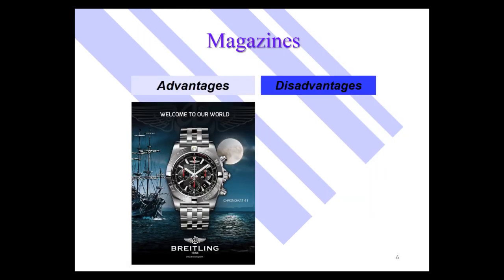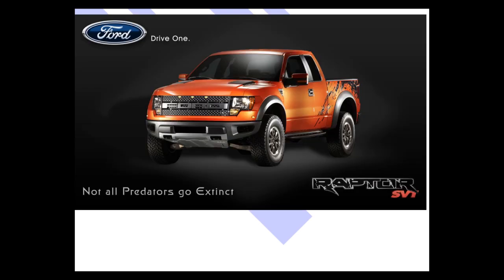Magazines definitely have pros and cons. What are some advantages of magazines? Awesome reproduction, especially color. You can be very targeted because there are so many special interest magazines — very selective from a demographic standpoint. Nowadays you can do it regionally as well. Sports Illustrated, for example, has about 50 different regional cuts, so if you want to be in Sports Illustrated only in Maine and New Hampshire, you can do that.